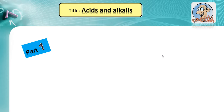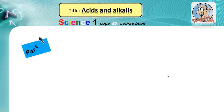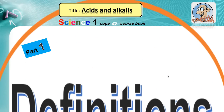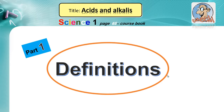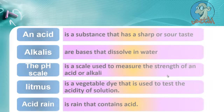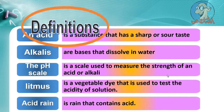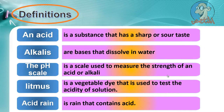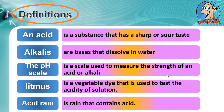Let's get started. The title is Acids and Alkalis, Part 1. Let's start with these definitions. An acid is a substance that has a sharp or sour taste. Alkalis are bases that dissolve in water.